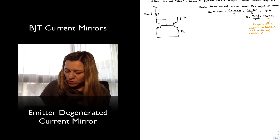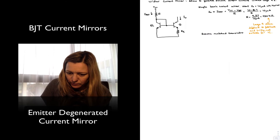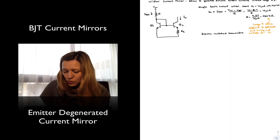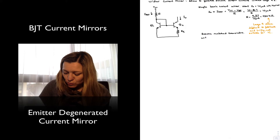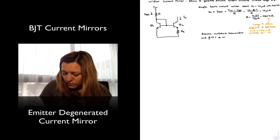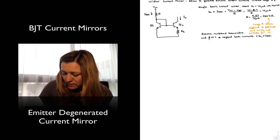We are going to assume, as always, that the transistors are well matched. Assume matched transistors for our Q1 and Q2. We are also going to, for simplicity in our calculations, neglect the base currents, which is equivalent to saying we are going to assume that beta is much larger than 1. Therefore, neglecting base currents is essentially the same as saying IC1 is going to be approximated as I_ref.